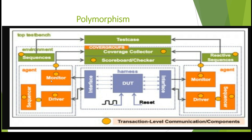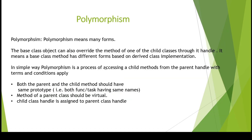Now I want to change the standard packet to a small packet — I am using a small address and I want to use that packet to drive the DUT. How do you change the handle inside the monitor, driver, and sequencer? It takes a lot of time to change inside the testbench. How can you fix this issue? By using polymorphism.